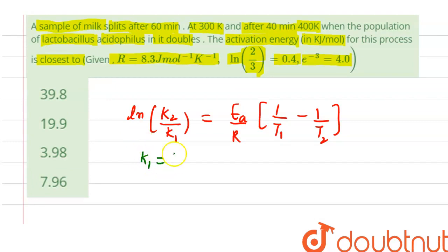Here k1 is given which is 60, T1 is given 300, k2 is given which is 40, and T2 is given which is 400.